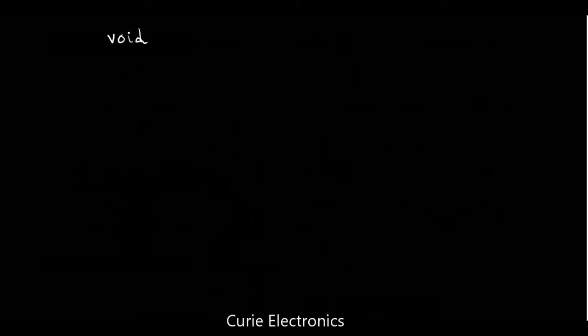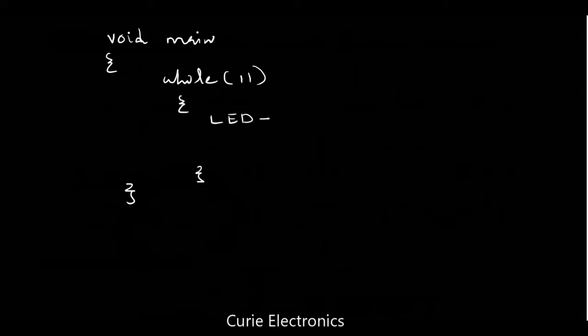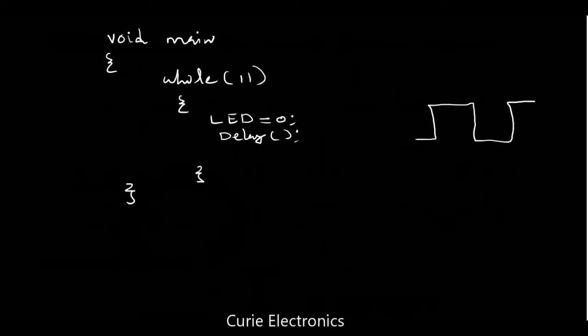Embedded applications should continuously do a function. For that, inside void main we will put a while loop: while(1). This is our infinite loop. Inside the while curly braces we write LED equals 0, then call the delay function. This delay function generates almost 0.5 seconds. So out of 1 second, 0.5 second it is on and 0.5 second it is off — we get a square wave on the output pin.